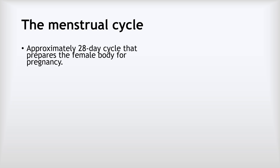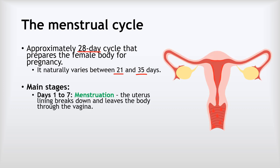The menstrual cycle is an approximately 28-day cycle that prepares the female body for pregnancy. It naturally varies between about 21 days and about 35 days, so if your cycle isn't exactly 28 days, that's absolutely fine. If it is less than 21 days or longer than 35 days, you may want to see a doctor, but that range is perfectly natural. We'll base all stages on a 28-day cycle — these are average values, as different bodies work slightly differently.